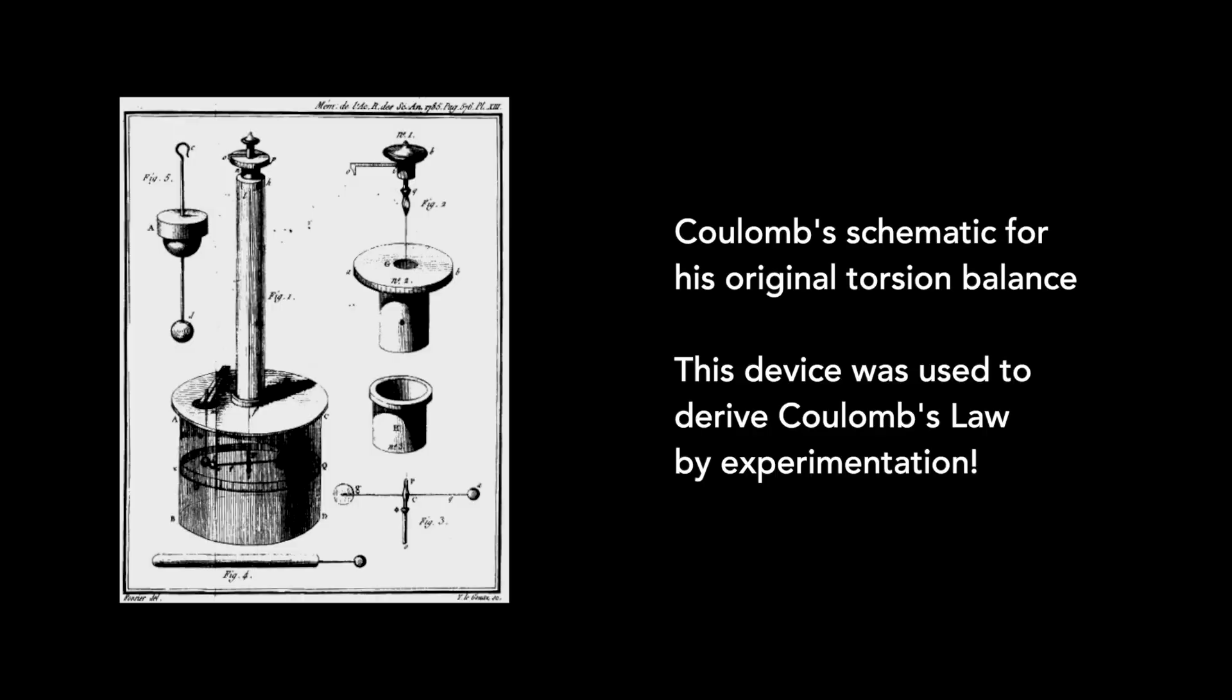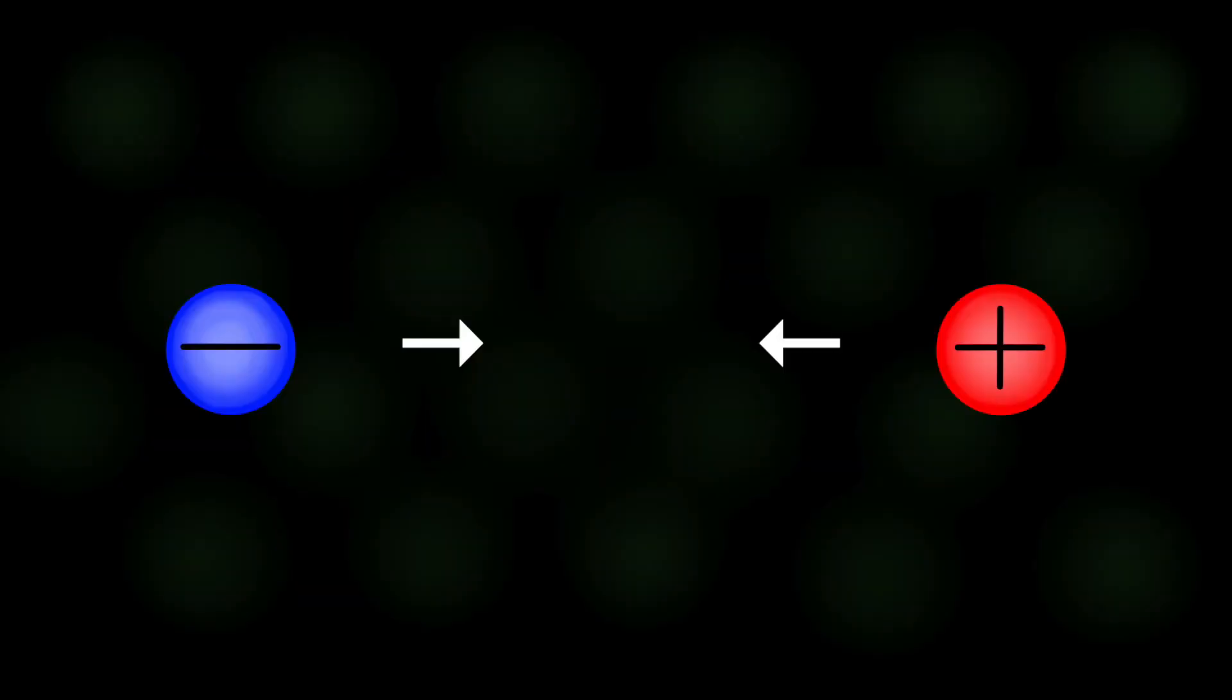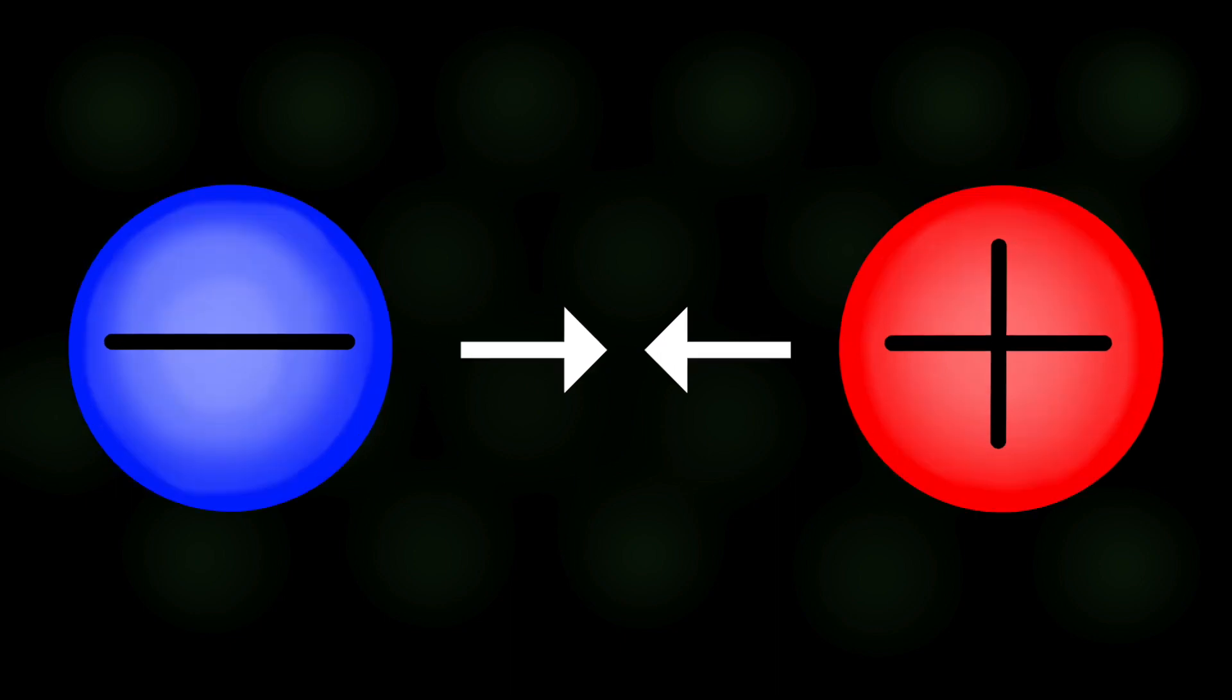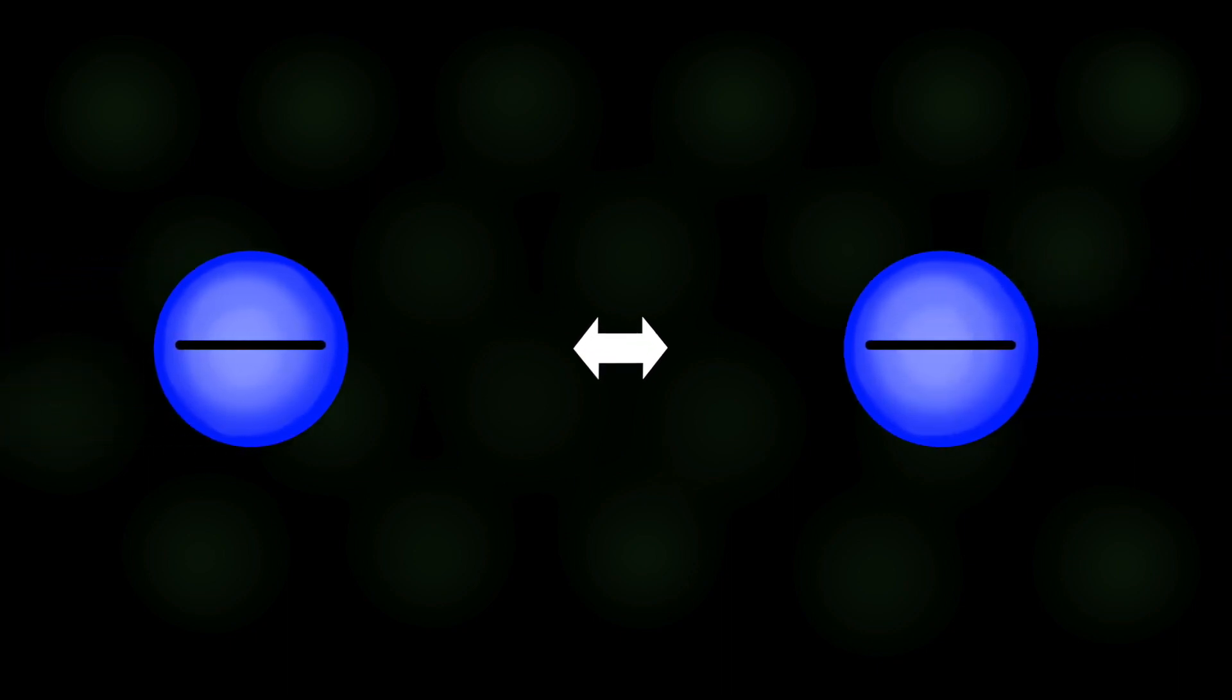Experiments with the torsion balance showed that this force increased when larger amounts of charge were given to the spheres. More charge resulted in more attraction or repulsion. The force also increased when the two spheres were brought closer together. Doing this actually caused an exponential increase. Halving the distance resulted in four times the force.